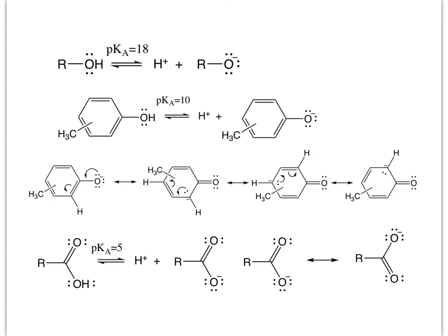If it's a phenol, we can be more specific and call it a phenoxide — a methyl phenoxide ion. The methyl phenoxide is stabilized by resonance: the electrons can move here, and part of the negative charge can be shared with a carbon in the ring. We can draw multiple resonance structures where we share electron density with different carbons in the ring. So a phenol is a stronger acid than an alcohol because the phenoxide conjugate base is stabilized by resonance.